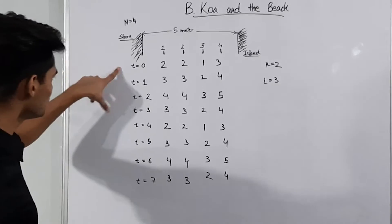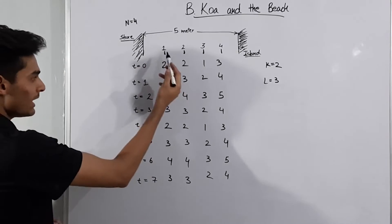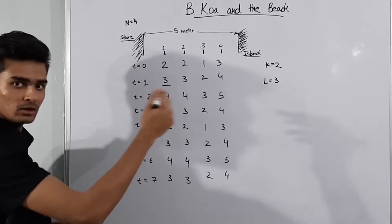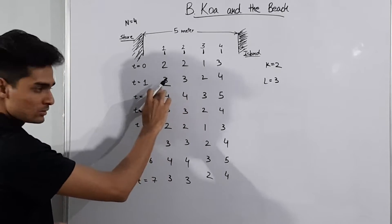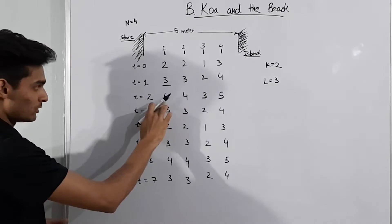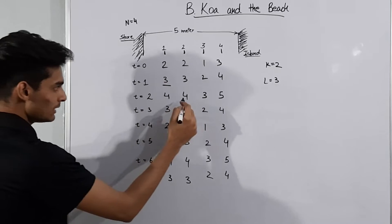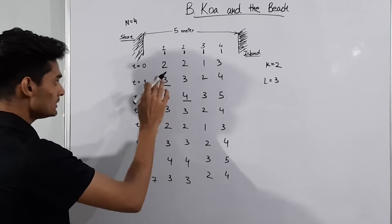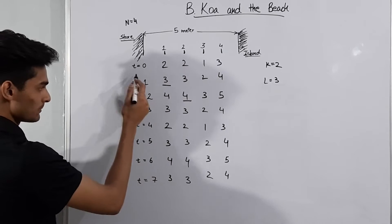Starting at t=0, we reach point 1 at t=1 where the depth is 3, which is ≤ 3. However, we cannot stay because the depth at the next second will be 4, which is greater than 3. When we try to move forward, the depth there is also 4, greater than 3. Therefore there is no valid way to reach the island starting at t=0.